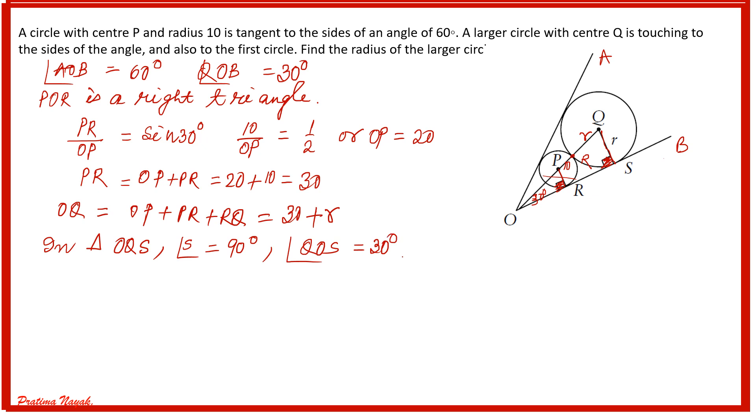And angle QOS is half of 60, that will be 30 degrees. Here the hypotenuse is OQ, opposite of 90 degrees. OQ is equal to 30 plus r.